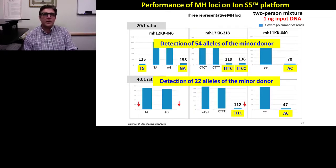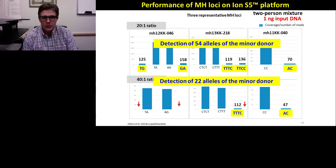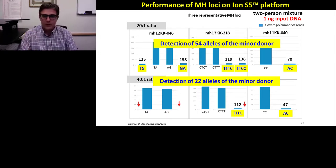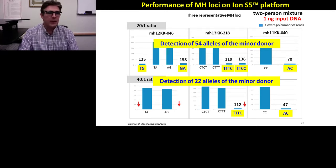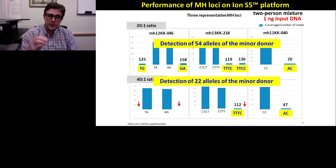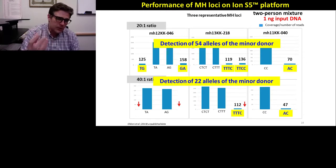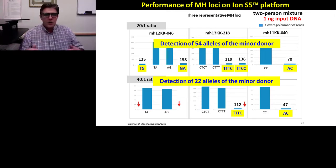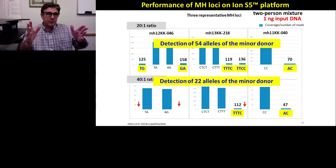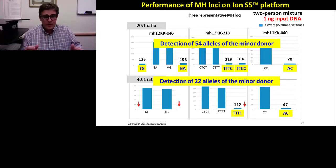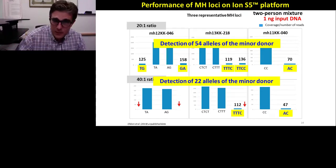With microhaplotypes, we detected a significant number of minor contributor alleles at the 20:1 ratio, and even at 40:1 we were still detecting a good number — 54 alleles at 20:1 and 22 alleles at 40:1. The random match probability generated from just those 22 alleles at 40:1 was around one in a million. So we went from a CE profile at 40:1 that yielded nothing, to achieving a random match probability of one in a million. That is a very powerful result.